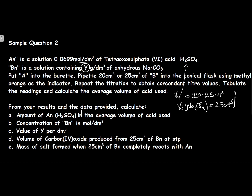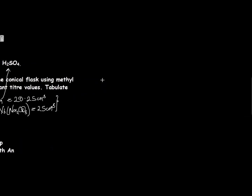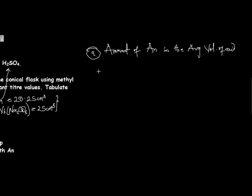From your result and the data provided, calculate the amount of AN, which is the acid, in the average volume of acid used. The first question is: we are calculating the amount of AN in the average volume of acid used. To do that, we use: concentration is equal to amount in moles over volume of the solution in dm³.